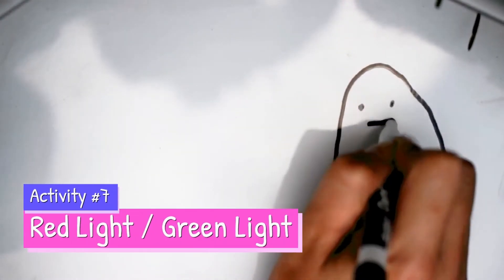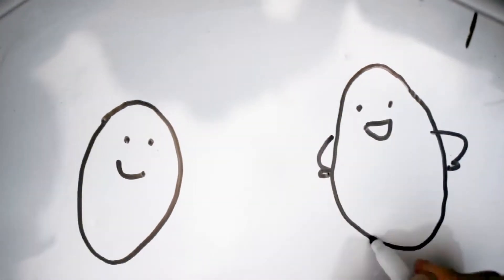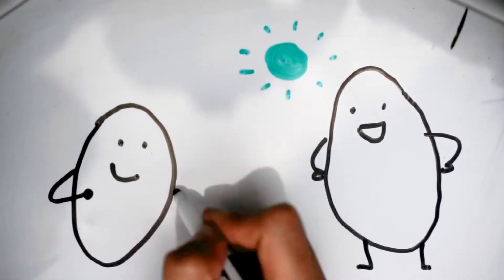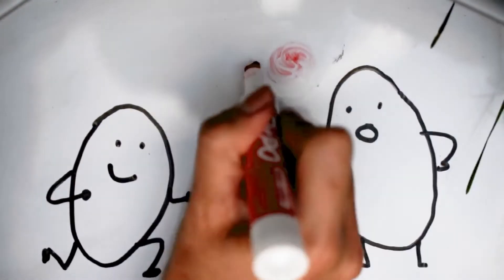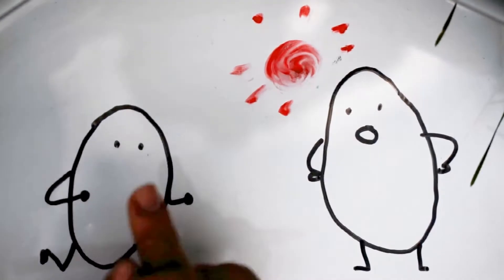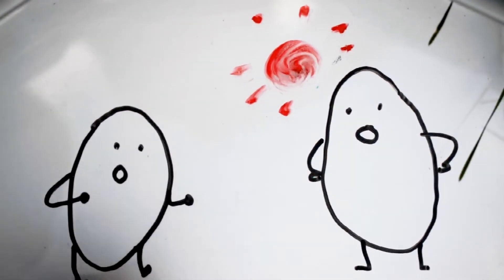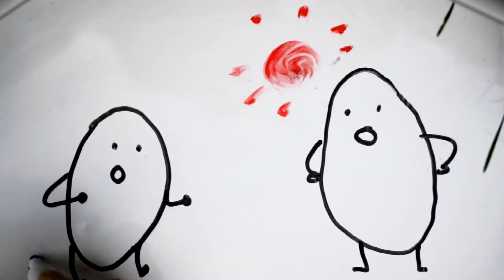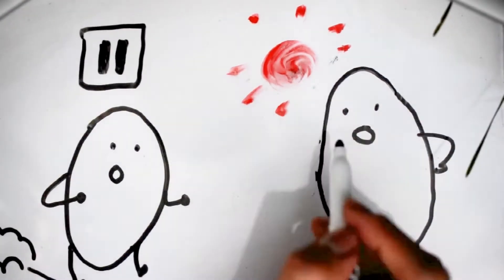Next, the potato dreamed about the game Red Light, Green Light. This game works best with a group of friends. In this game, one potato will be the instructor. The other potatoes will be the runners. When the instructor says, Green Light, the runners will run forward until they hear the instructor say, Red Light, and then they stop. If the instructor catches you running after saying, Red Light, you have to start from the beginning. See who can get to the finish line first.